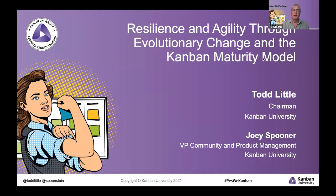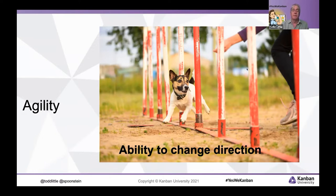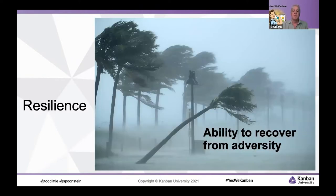Today we're going to talk about Kanban and how it works through evolutionary change and the Kanban Maturity Model. We're talking about agility — our ability to change direction — which is what we need in tough times. But we also need resilience: our ability to recover from adversity. The Kanban method addresses both of these questions quite well.